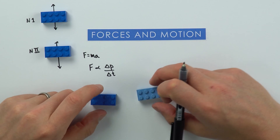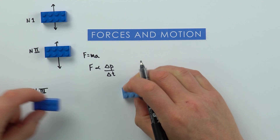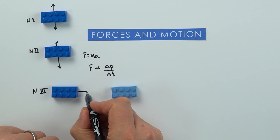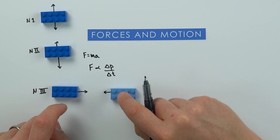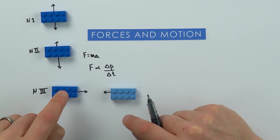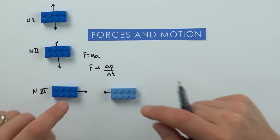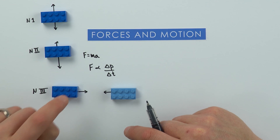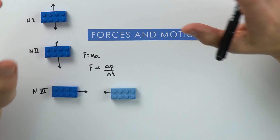Newton's third law is about the interaction between two different objects. If we have object A and object B, there's going to be an equal and opposite force of object B on object A, of the same type as the force of object A on object B. We'll be using this as we explore the rest of this topic.